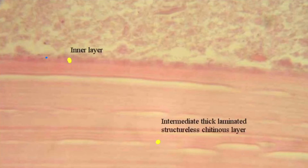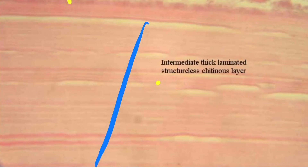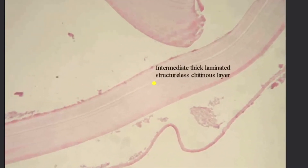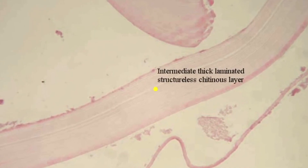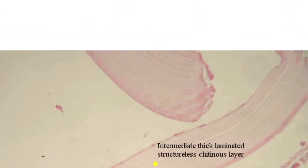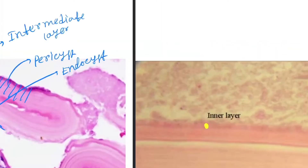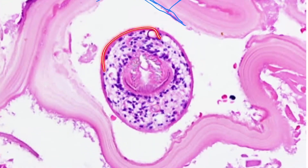In another picture, the inner layer is very thin — here it is the inner layer. And these are the intermediate layers, you can see the intermediate layer. Here is the inner layer, and here is a daughter cyst. You can also see the daughter cyst here. So this was the hydatid cyst.